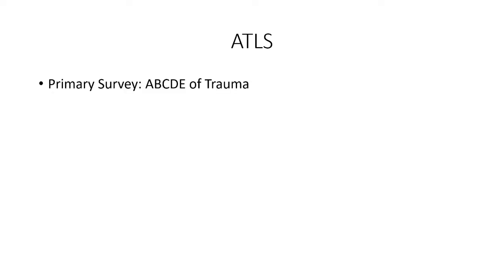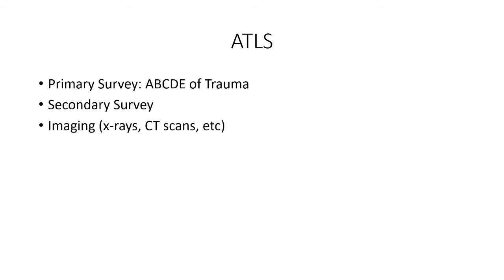If you follow ATLS, you'll start with your primary survey - the ABCDE of trauma. You'll assess the airway and the breathing, look at the circulation, the disability, and then expose the patient to look for evidence of trauma. You'd then move on to your secondary survey, and along the way you'd probably get some imaging done, such as x-rays or CT scans.